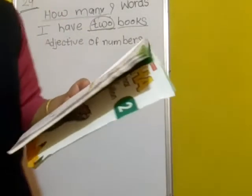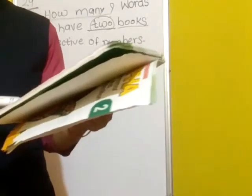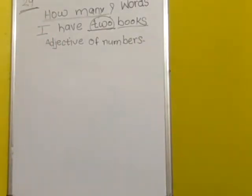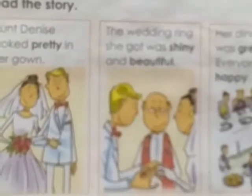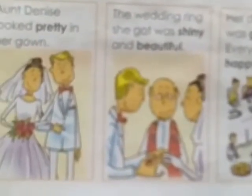Children, now we are going to see page number 29. See page number 29 - position of describing words. Here, aunt Denise looked pretty in her gown. So aunt Denise is the noun here, and 'pretty' is the describing word for that noun.